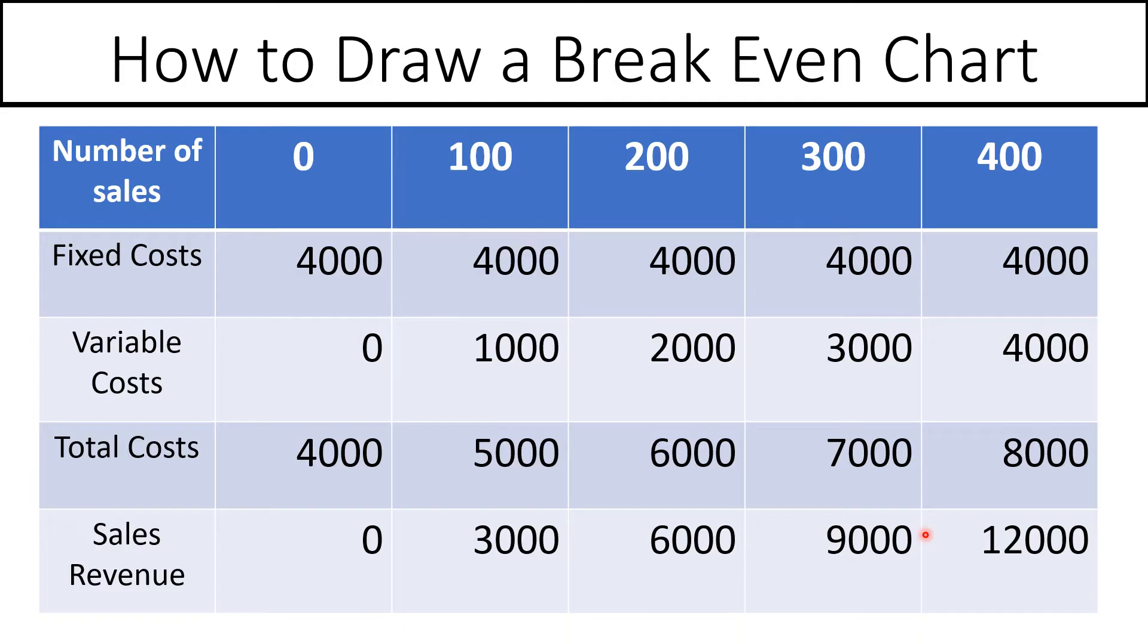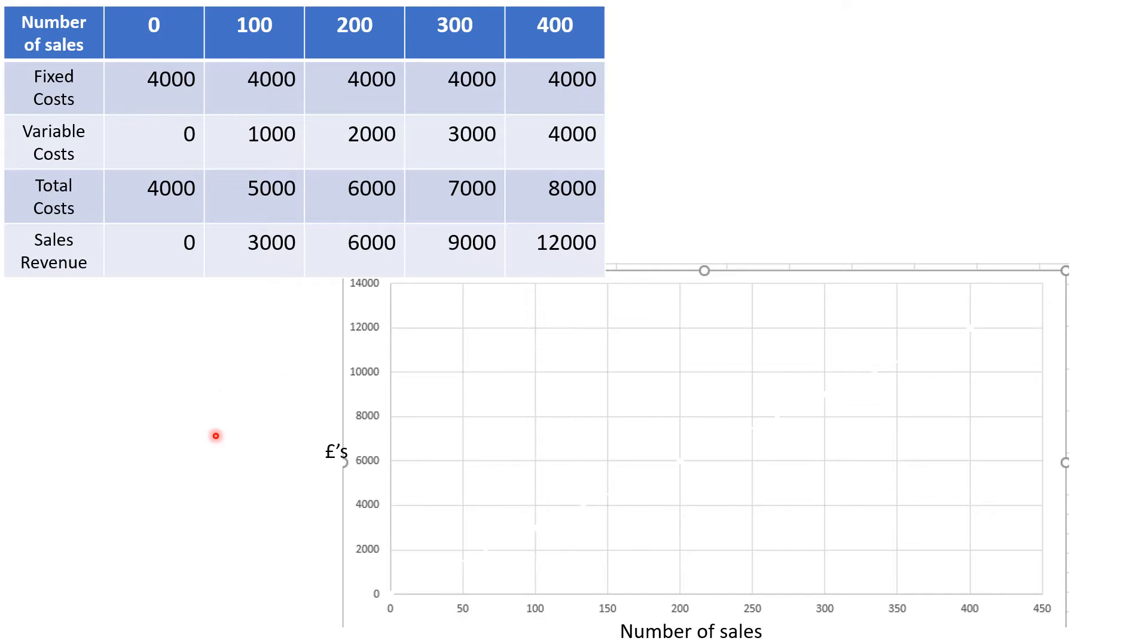This is a really common exam question and one that sometimes can be a bit confusing. So you'll often be given a blank break-even chart like this, and it is your job to use the information below to fill it in. On the x-axis you can see it's number of sales, and on the y-axis it's pounds.